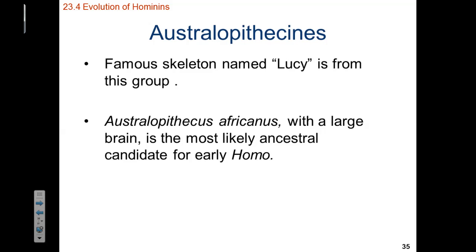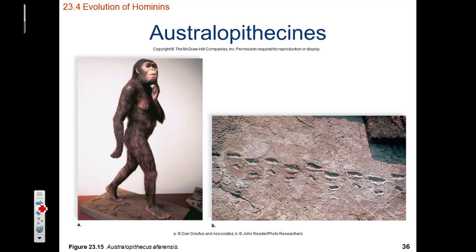Then we had Australopithecus africanus, also known as 'Lucy.' Australopithecus africanus was found to have a large brain and was initially thought to be the 'missing link' in human evolution — a very popular candidate for the evolution of the Homo genus. We have found fossilized footprints from these organisms in addition to fossilized skeletal remains.